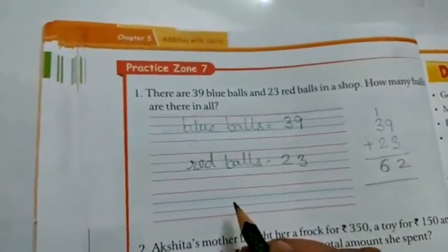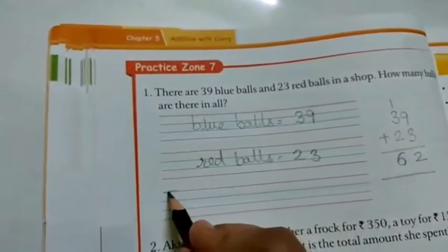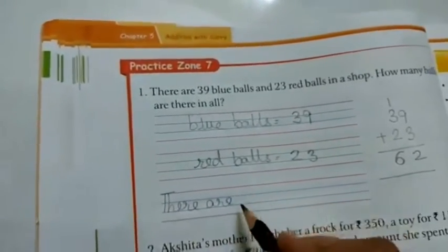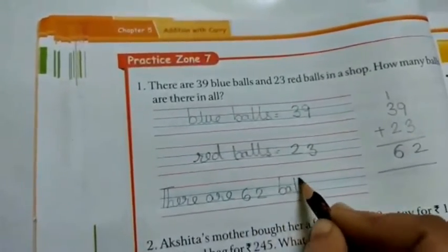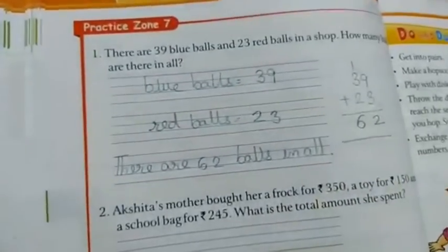Total number. So what are you going to write as the last statement? There are 62 balls in all.